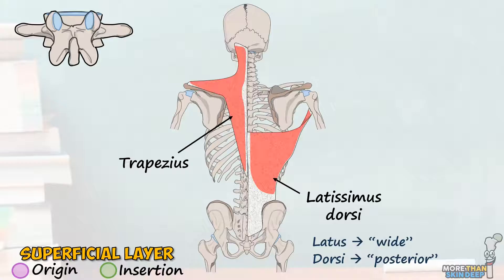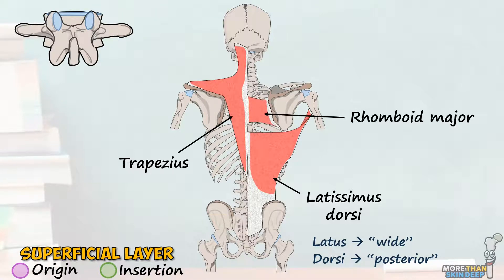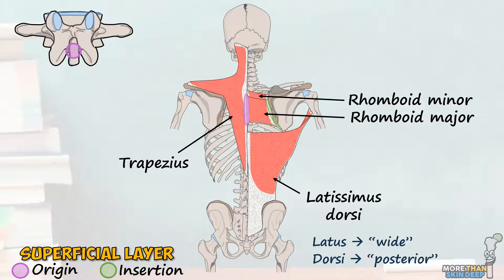The last three superficial back muscles are a little less well known and all act on the scapula. The first is the four-sided rhomboid major, named simply for its appearance when dissected. Rhomboid major originates from the spinous processes of T2 to T5 and inserts into the medial part of the scapula. Accompanying it is its smaller cousin, rhomboid minor, which originates from the nuchal ligament and the spinous processes of C7 and T1, inserting into the medial scapula above rhomboid major. Both muscles act together to retract and downwardly rotate the scapula.